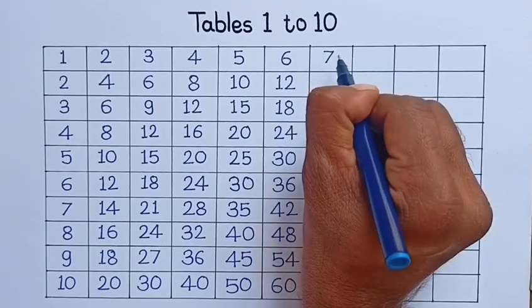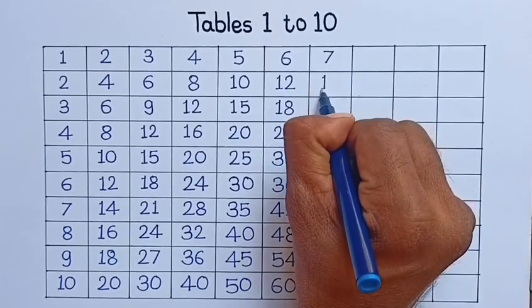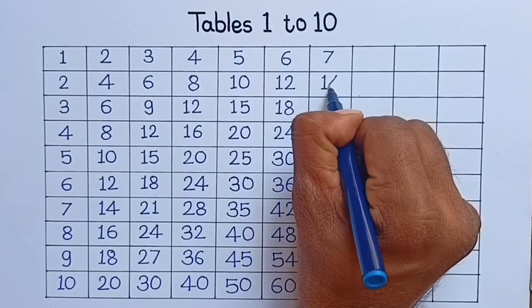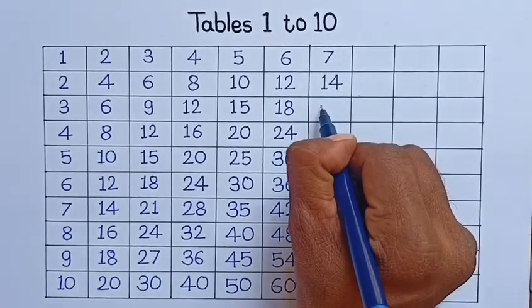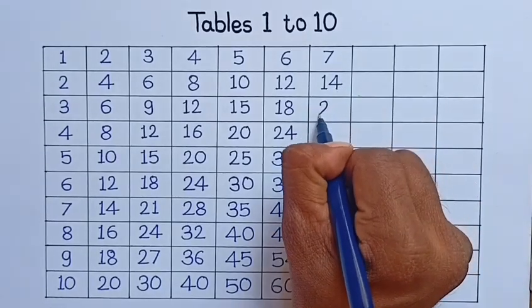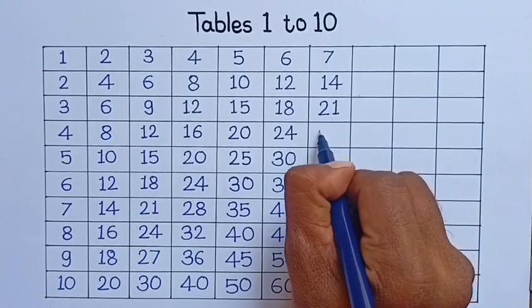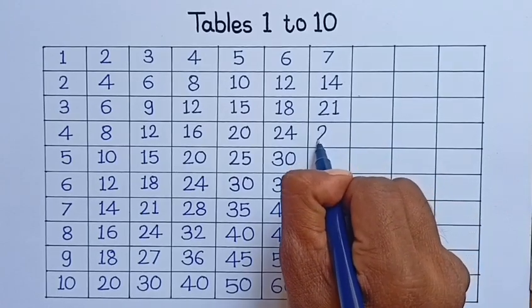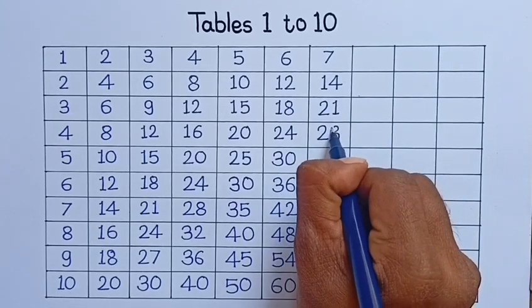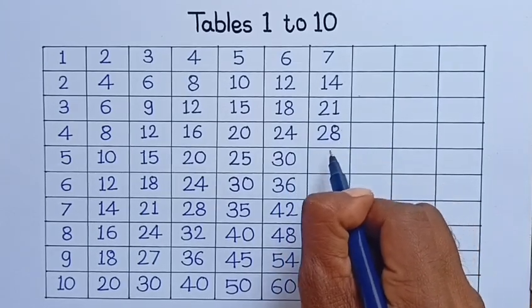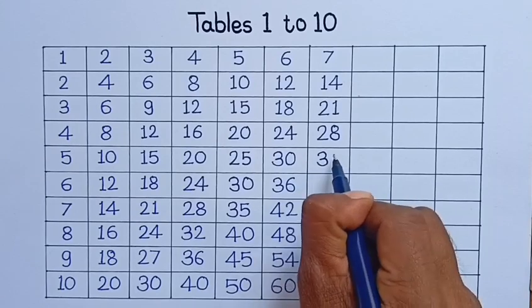7, 1 is 7. 7, 2 is 14. 7, 3 is 21. 7, 4 is 28. 7, 5 is 35.